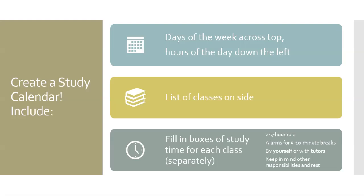You should also keep in mind the 2-3 hour rule, which states that for every hour of usual class time, you should study 2-3 hours on your own. Set alarms for yourself, taking 5-10 minute breaks. Also make sure to give yourself time for other responsibilities as well as rest. This studying can be done by yourself through reviewing, rewriting, or reciting notes to yourself, or through a tutoring appointment.